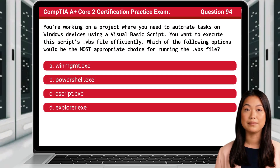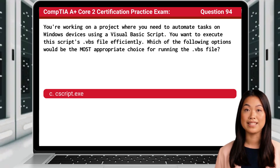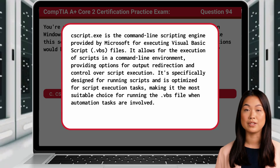Question 94. You're working on a project where you need to automate tasks on Windows devices using a Visual Basic script. You want to execute this script's .vbs file efficiently. Which of the following options would be the most appropriate choice for running the .vbs file? The answer is C, CScript.exe. CScript.exe is the command-line scripting engine provided by Microsoft for executing Visual Basic script files. It allows for the execution of scripts in a command-line environment, providing options for output redirection and control over script execution. It's specifically designed for running scripts and is optimized for script execution tasks, making it the most suitable choice for running .vbs files when automation tasks are involved.